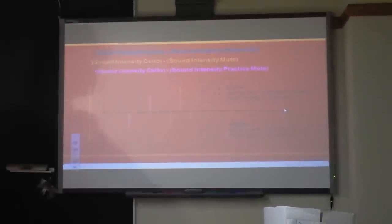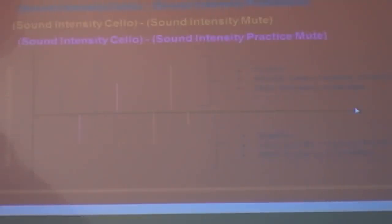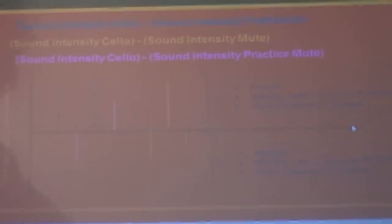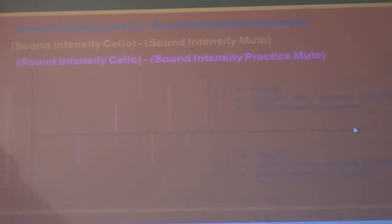So the next thing that we did was compare the sound intensity of the practice cello and the mutes to the sound intensity of the cello. So we subtracted those sound intensities from the sound intensity of the cello, and then we graphed it. So any of the positive values that you're going to see are going to be where a frequency is damped, and any of the negative values are going to be where a frequency was amplified.